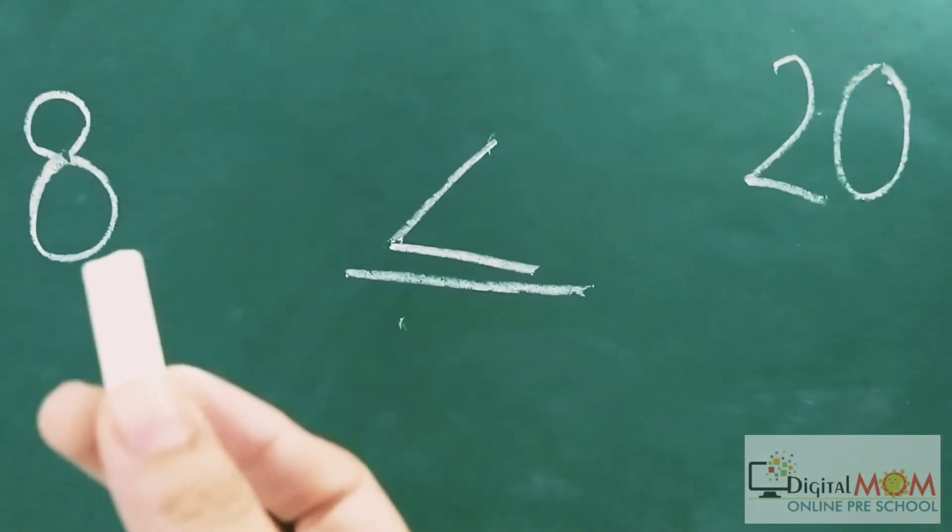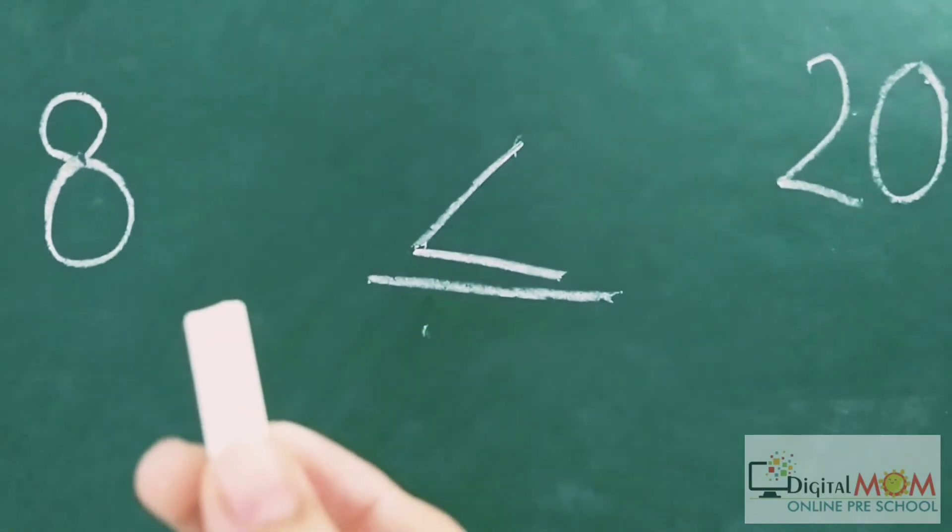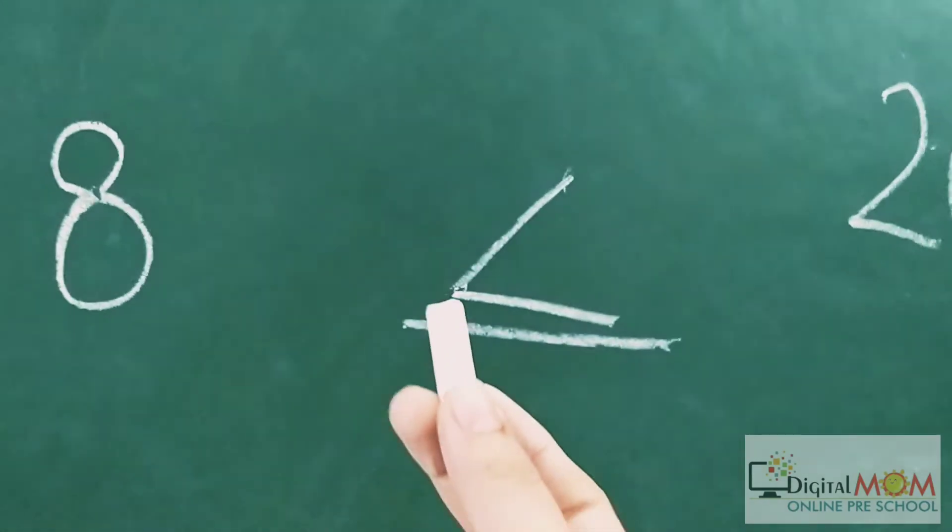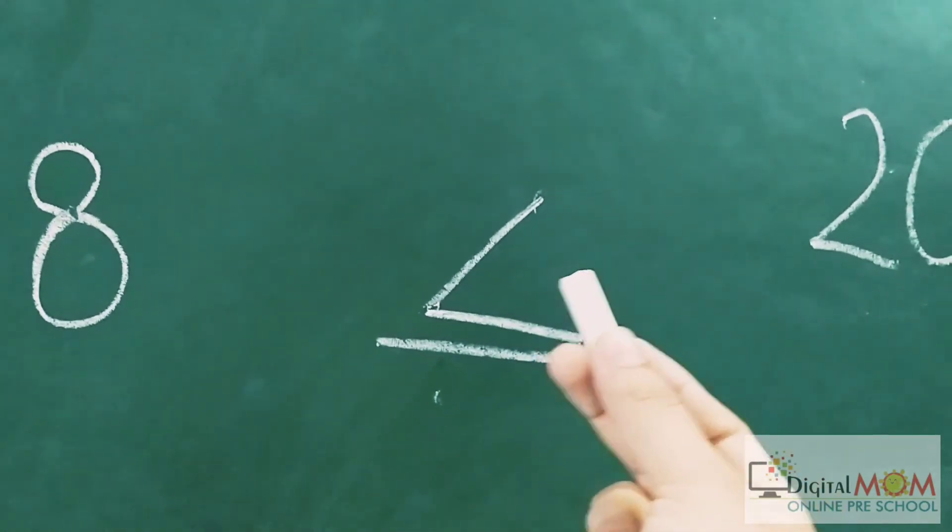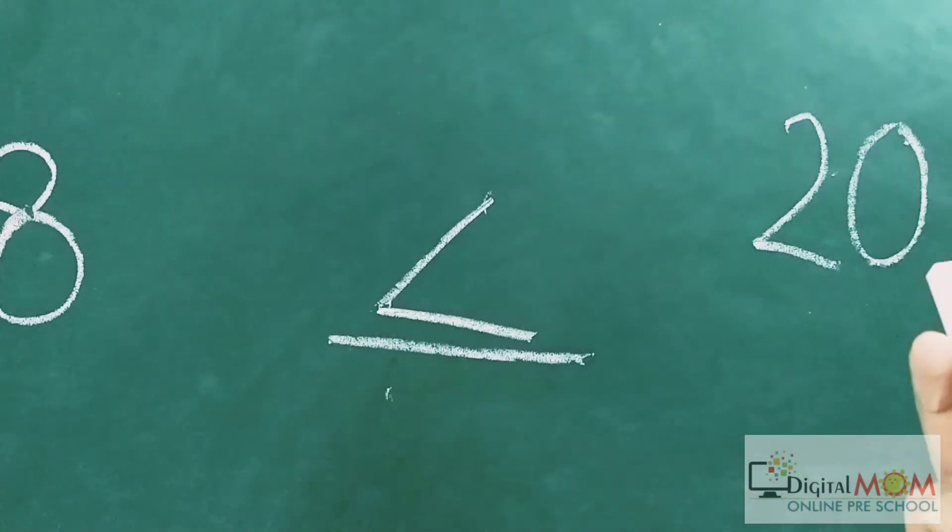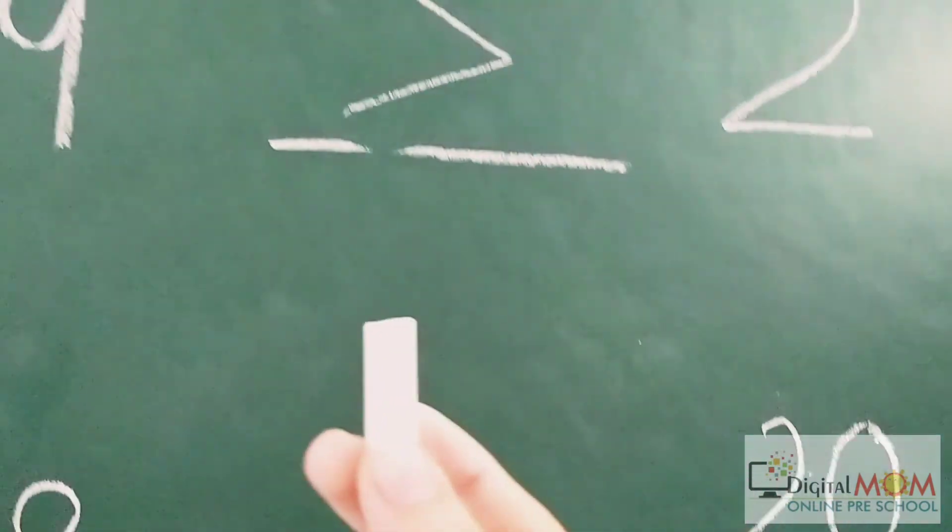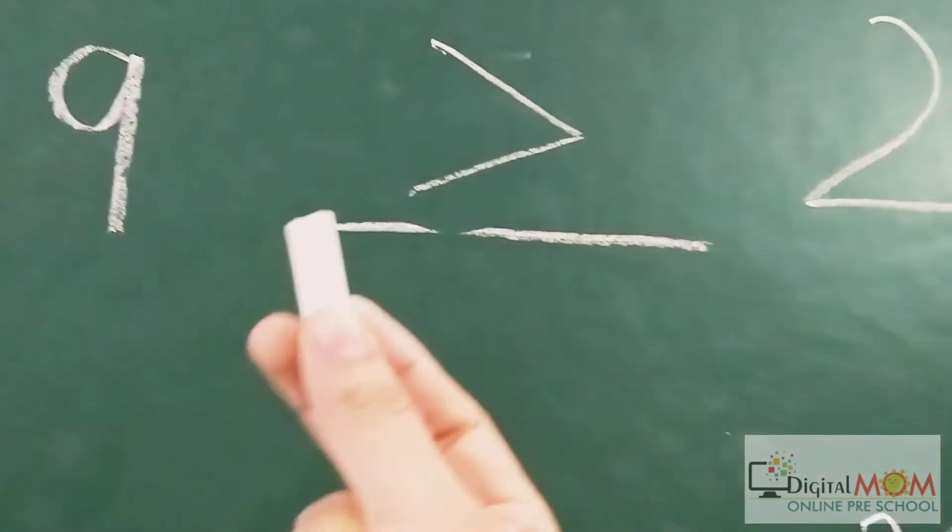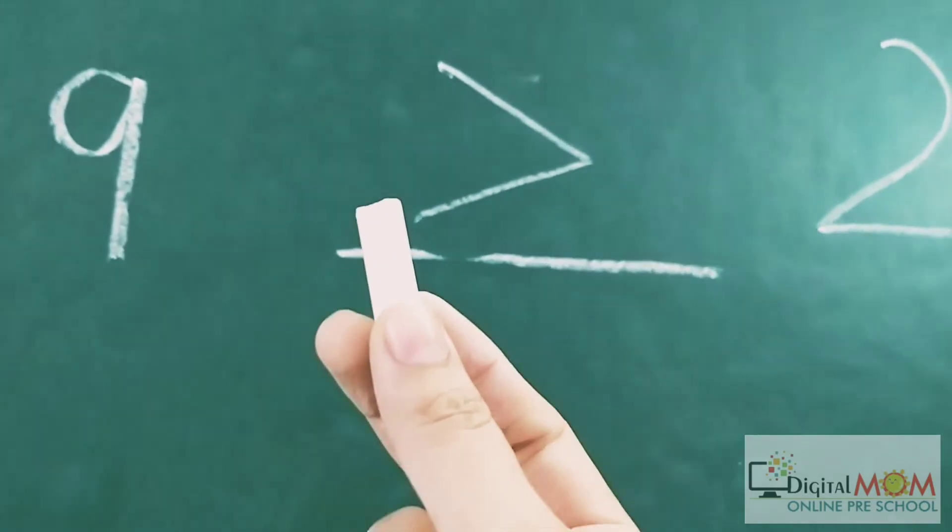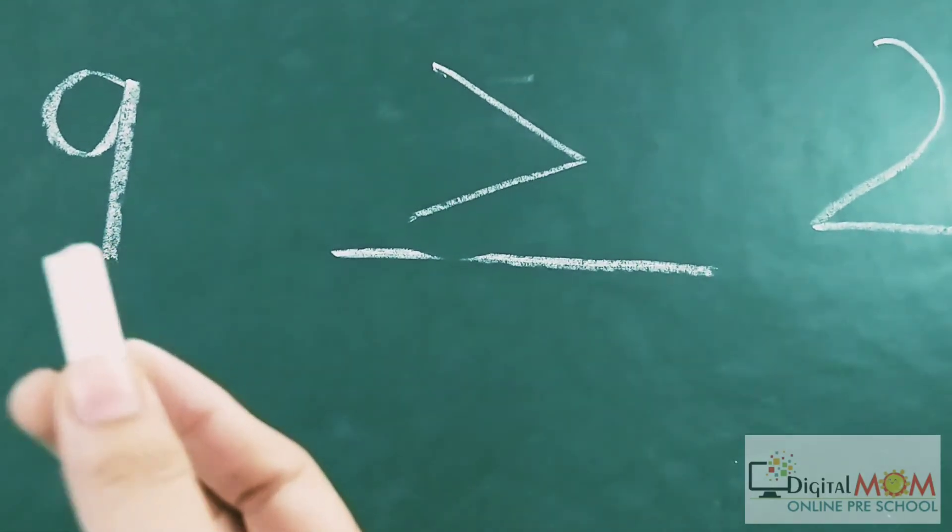When we have to choose less than, then we will always show the tail towards the lesser number and open mouth towards the greater number. And when we have to choose the greater number, always keep the mouth open towards the greater one.